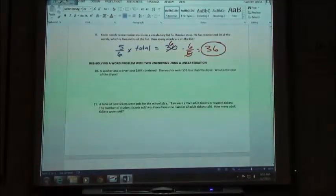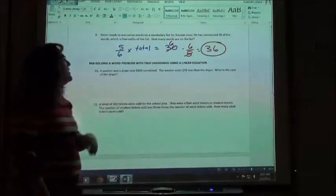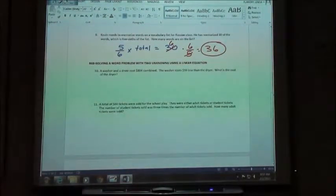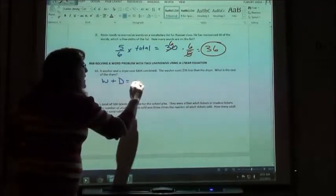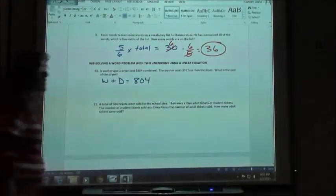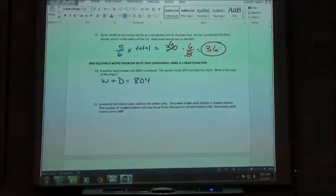Number 10. These are those ones where we're going to have two variables and two equations. Anytime you have two variables, you have to have two equations in order to solve the problem. It says a washer and a dryer cost $804 combined. So my washer plus my dryer is $804 altogether, if I add the price of the two of them.